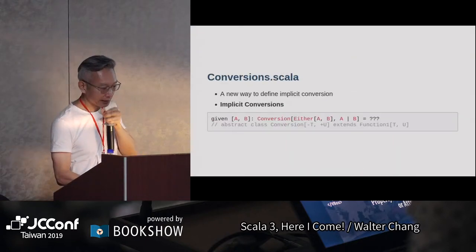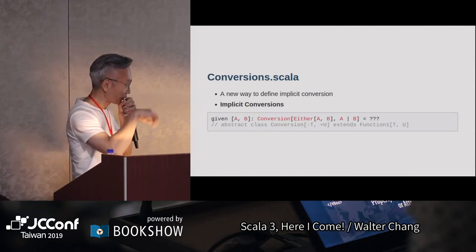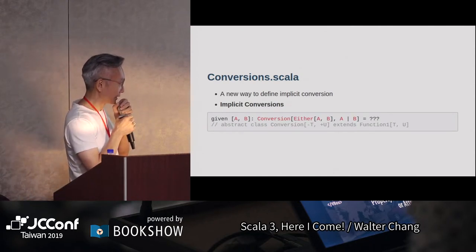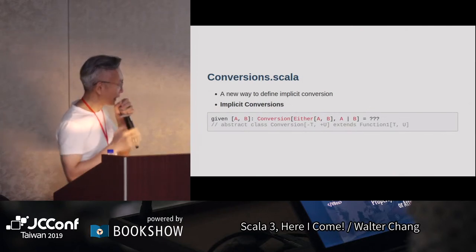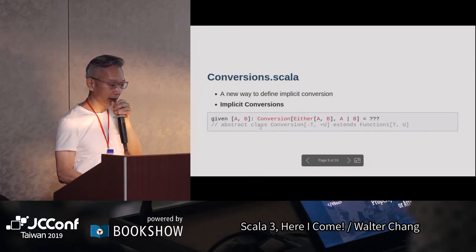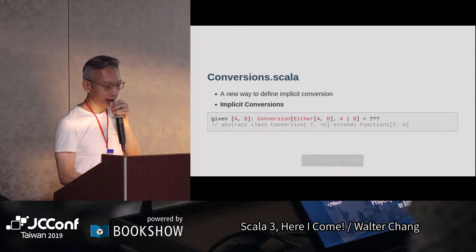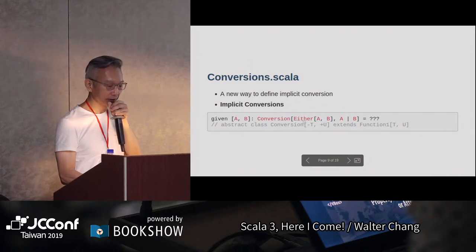有一個conversion.scala。在Scala 3裡面，如果你要做implicit conversion，有一個新的方法。如果你現在要用given來做的話，你就要implement一個叫做Conversion的abstract class。事實上這個Conversion的abstract class只是extend Function1[T, U]，所以它基本上就是一個function。